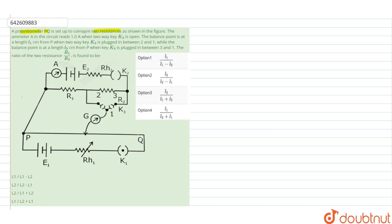The ammeter A of the circuit reads 1 ampere when two-way key K3 is open. The balance point is at length L1 from P when two-way key K3 is plugged between 2 and 1.